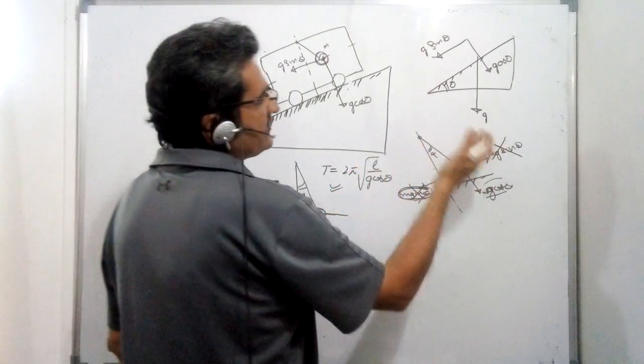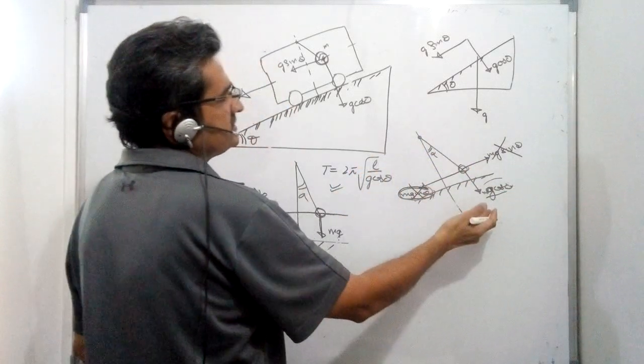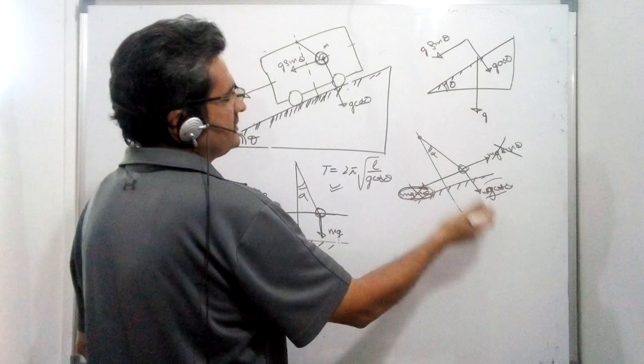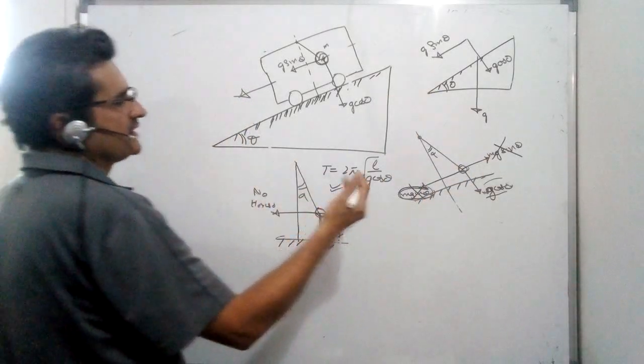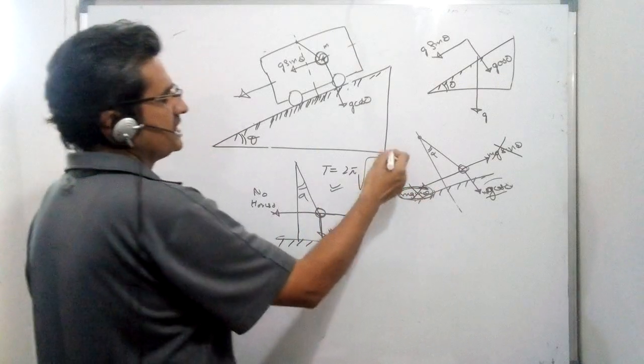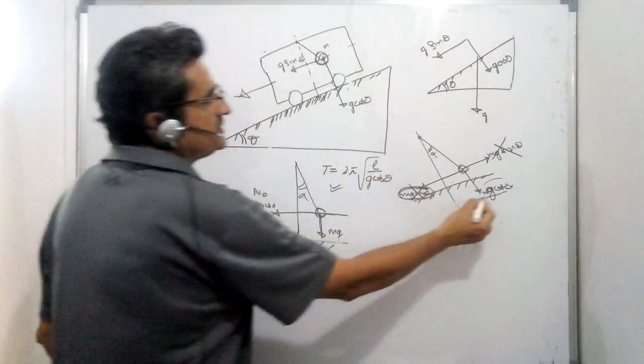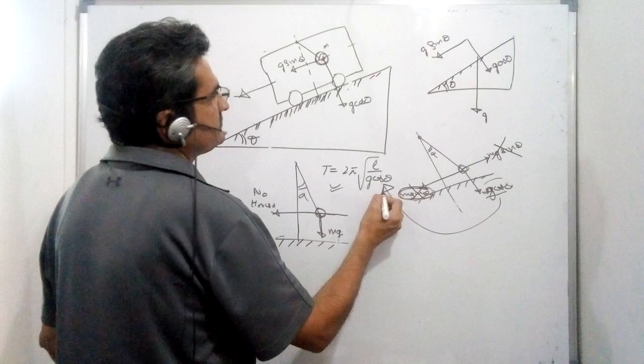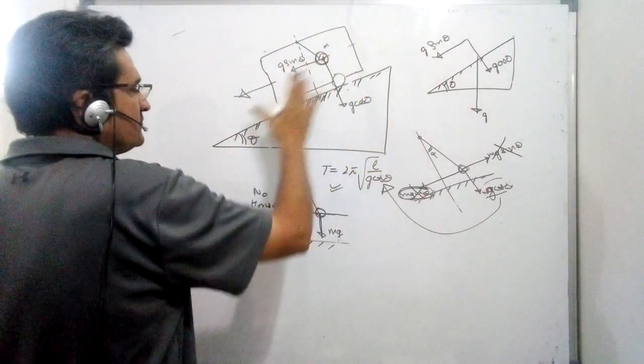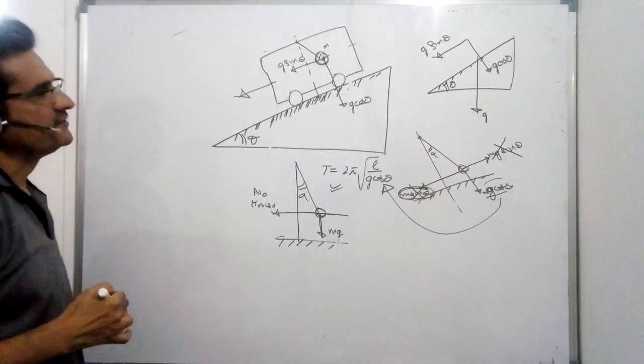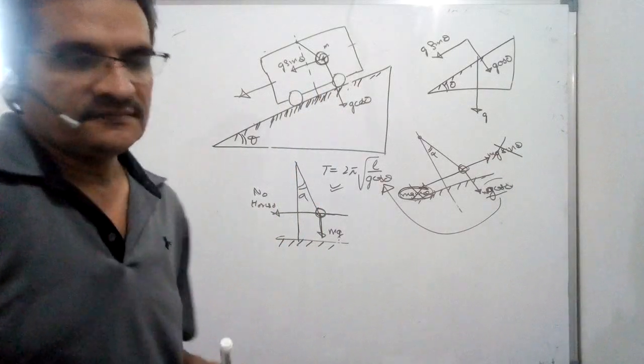The derivation I'm not doing; you know the time period for a pendulum is T = 2π√(L/G). So instead of G you write G cos theta, provided it's a free fall. The fall has to be smooth with no friction; then straight away you can use this formula.